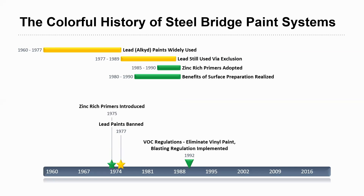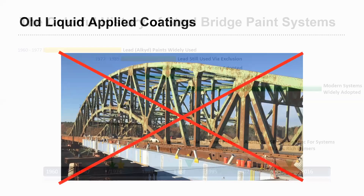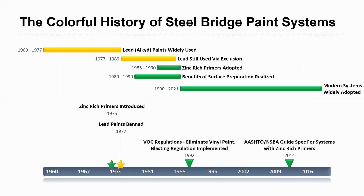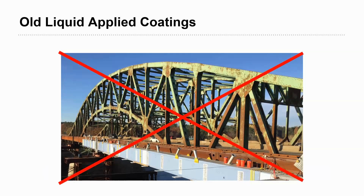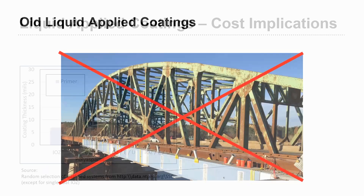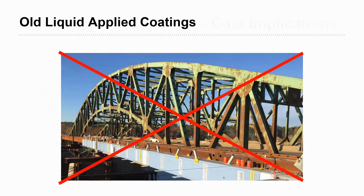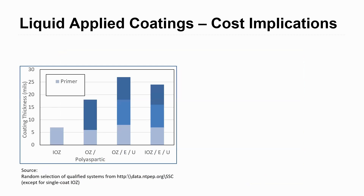This is a timeline of some of the new advances in paint systems. Pre-1970, lead systems were very common. Zinc-rich primers were introduced in the mid-1970s. More importantly, from 1980 to 1990 we started to recognize the benefits of surface preparation. Since about 1990 is when we've started to use our modern paint systems. So get out of your head the old systems and think more about the newer systems shown in the previous slides.